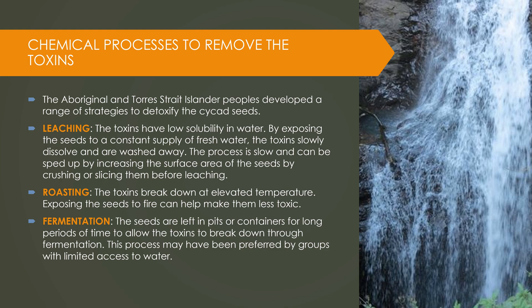Option two is roasting. The toxins may break down at elevated temperatures, so exposing the seeds to an indirect heat source can help make them less toxic. Our final option is fermentation. The seeds were left in pits or containers for long periods of time, allowing the toxins to break down through the actions of microbes and the chemical process called fermentation. It seems that the fermentation process may have been preferred by groups that had limited access to water, which means leaching was not a reliable option for them. It's also possible that rather than using one of those processes, they may have used several or all of them to end up with a clean cycad seed.